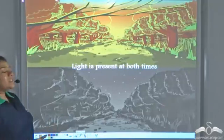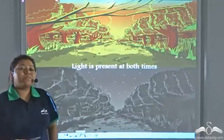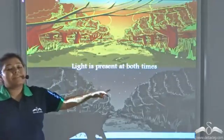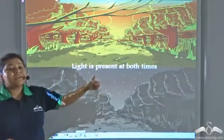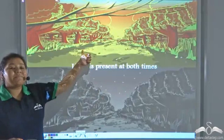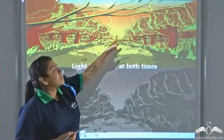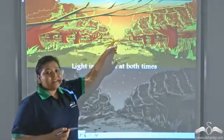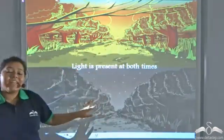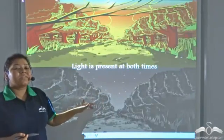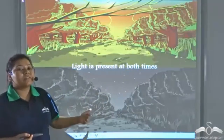Now light was present at both times. During the morning time, the light source was the sun, and in the night time, the light source was the moon.